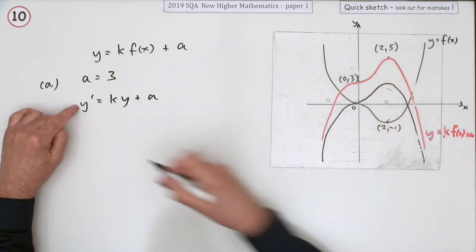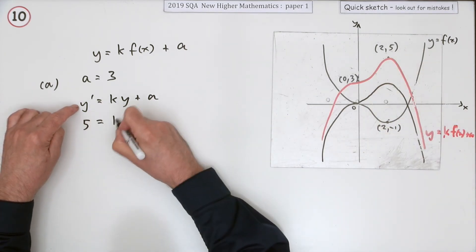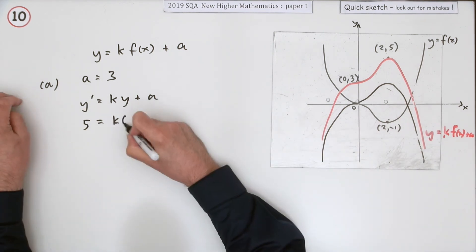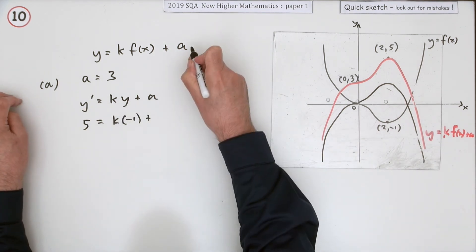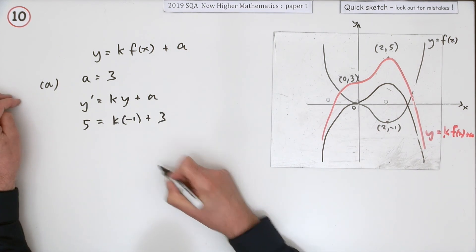So the new y-coordinate being five must be k times the old y-coordinate being negative one, plus the a which we know to be three. So you just solve that then.